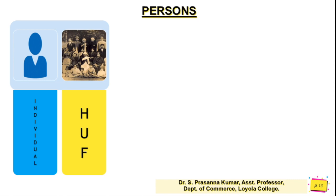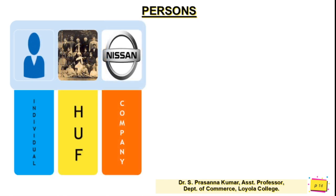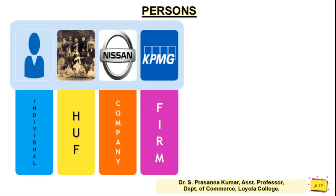In a Hindu Undivided Family, the head is called the Karta and all other members are called coparceners. If an HUF carries on a business, it is treated as a separate person. The third type is a company — an artificial person formed for carrying on business, registered under the Companies Act; examples include Nissan and Tata Motors. The fourth is a firm — two or more people who come together to carry on business and share profits or losses.